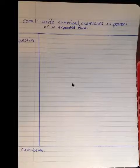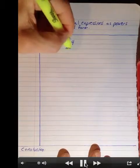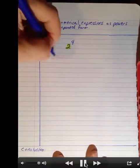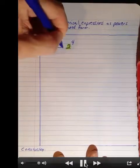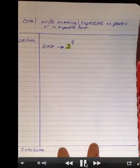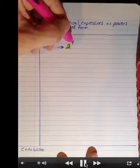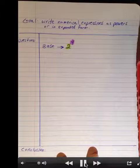The next lesson is to write numerical expressions as powers or in expanded form. Set up your notes and put a section for questions and conclusion. We're going to start with 2 to the 4th power. This is a power. I'm going to highlight the base in yellow and the exponent in pink, and together they make a power. This is written in power form.